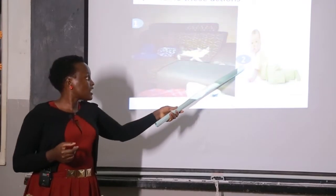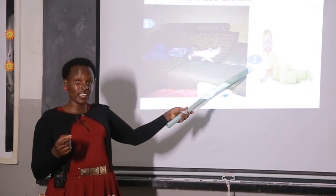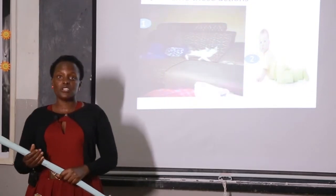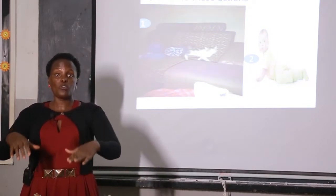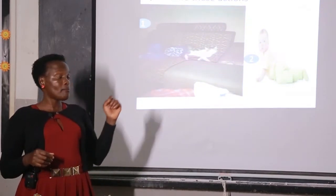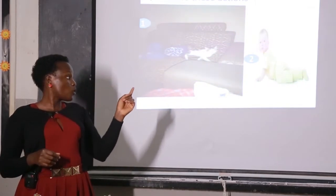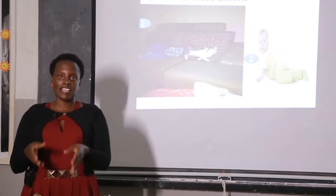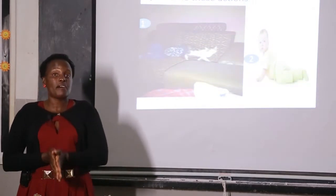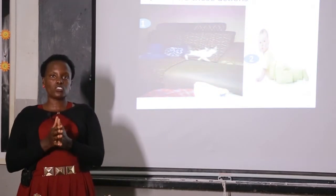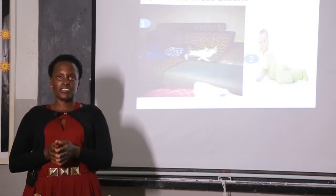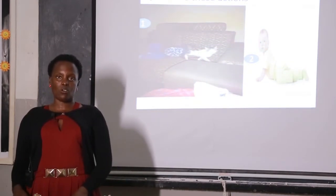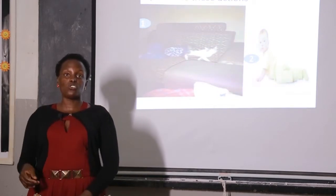This young child cannot walk yet and is walking on both legs and arms. The verb is 'crawl' — spelled C-R-A-W-L. In a sentence: The child crawled in the compound.